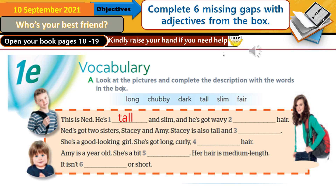1E — Vocabulary. A: Look at the pictures and complete the description with the words in the box, then listen and check your answers. This is Ned. He's tall and slim, and he's got wavy, fair hair. Ned's got two sides.